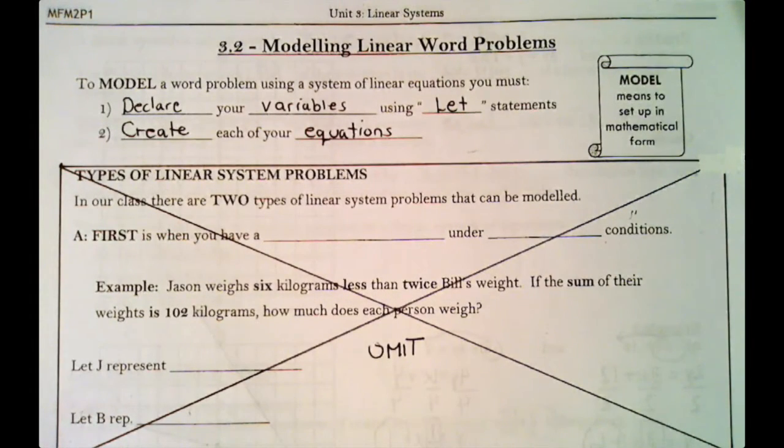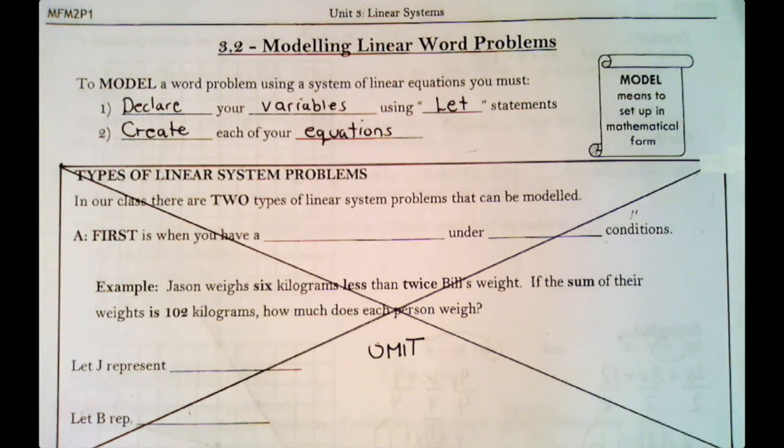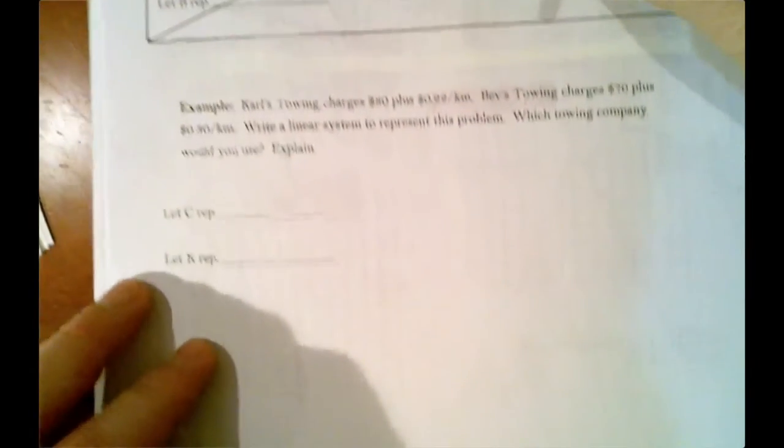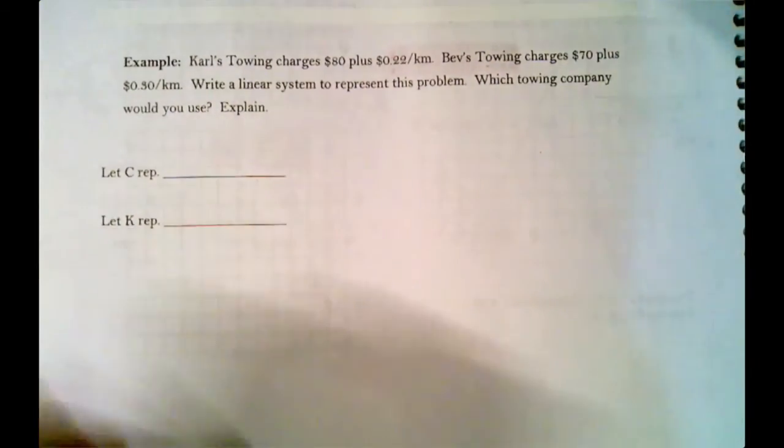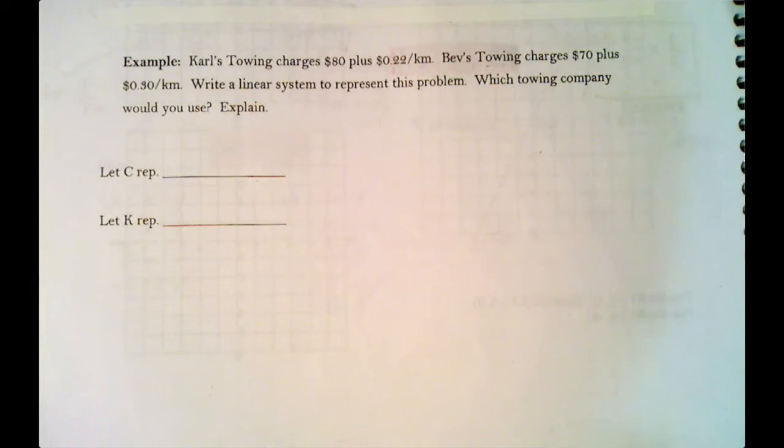So I'm going to try to show you an example of developing a word equation and defining some variables. Let's come down here to our first example. This is about Carl's towing. Carl's towing charges $80 plus 22 cents per kilometer. Bev's towing charges $70 and 30 cents a kilometer. Write a linear system to represent this problem. Which towing company would you use? Explain why. All right, let's take a look at this.